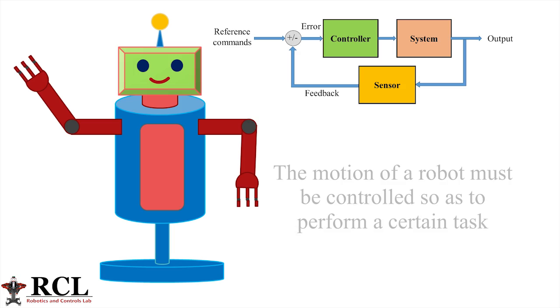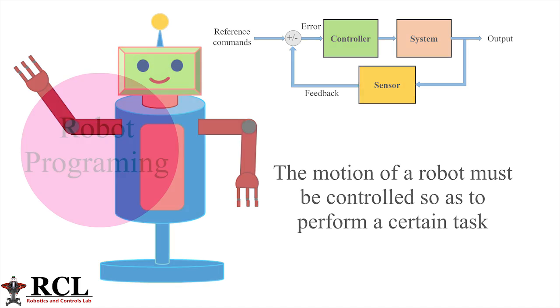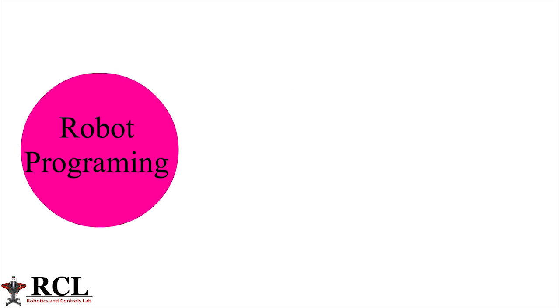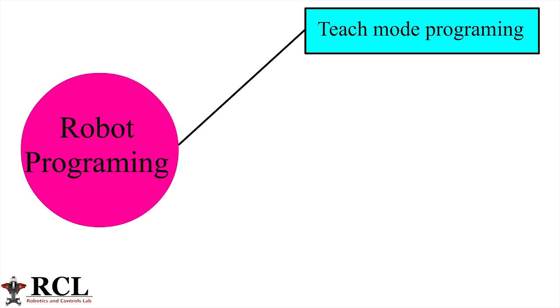The motion of the robot must be controlled so as to perform a certain task. This is usually done by programming. Industrial robots can be divided into three basic methods: teach mode programming, lead through programming, and learning from demonstrations.